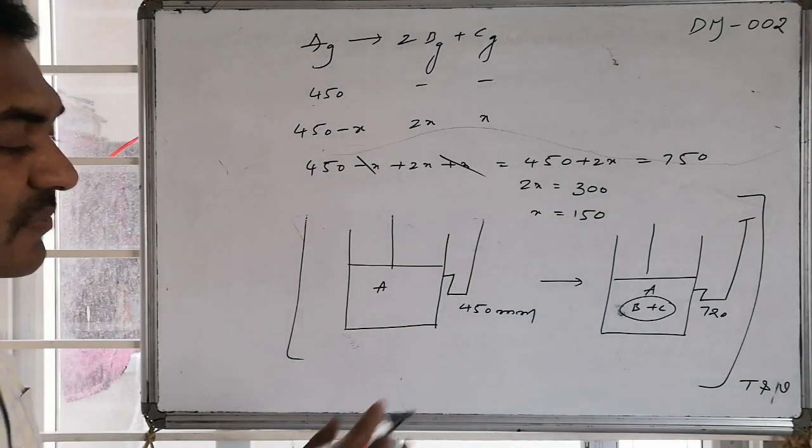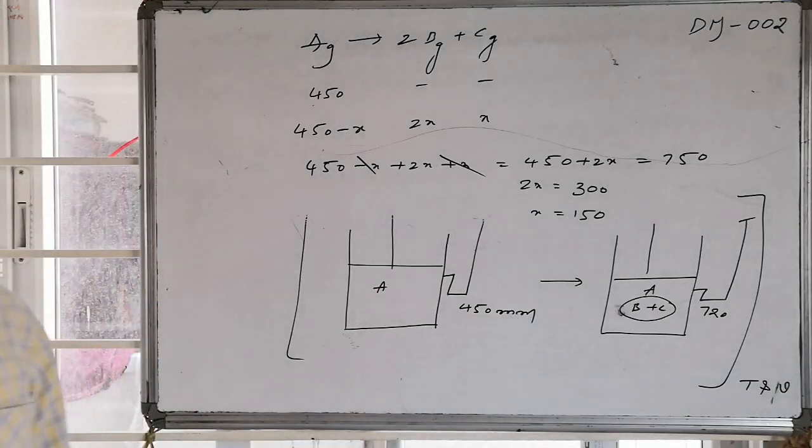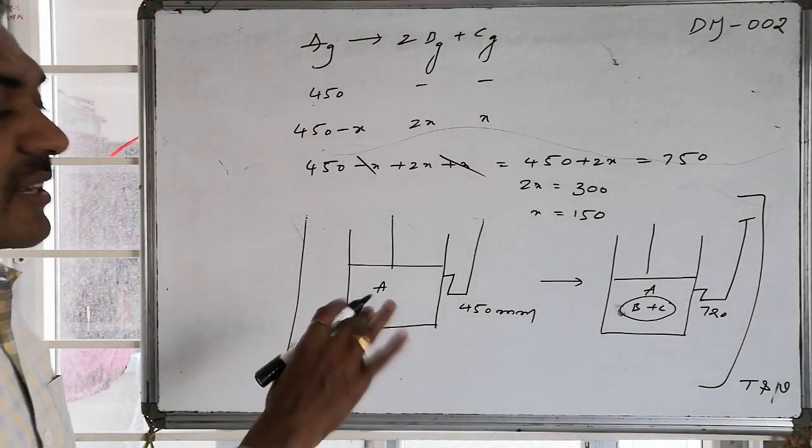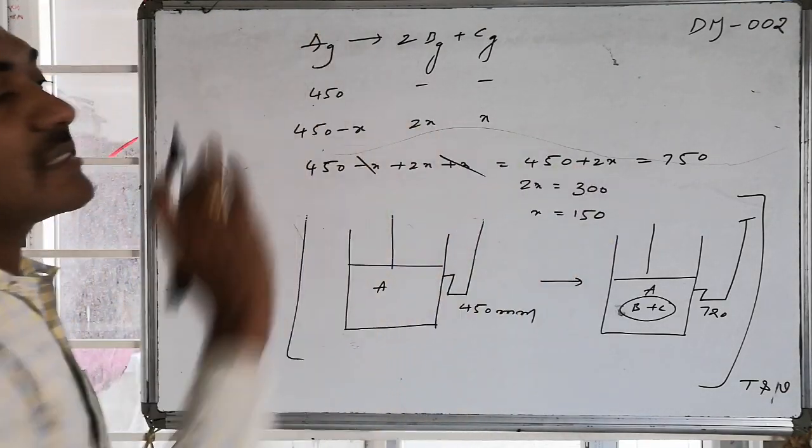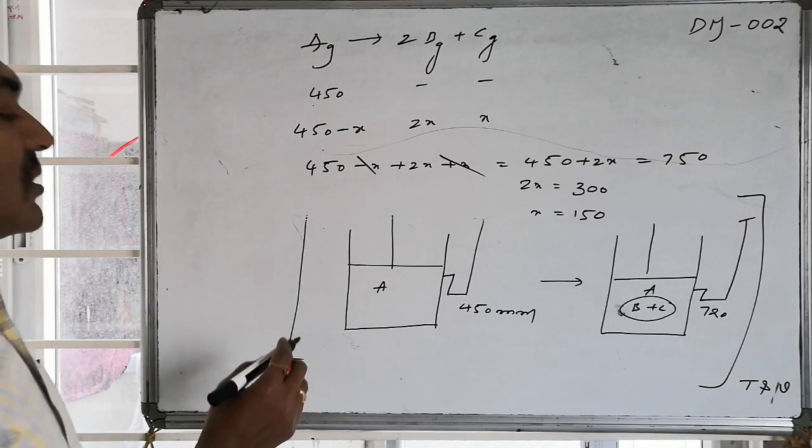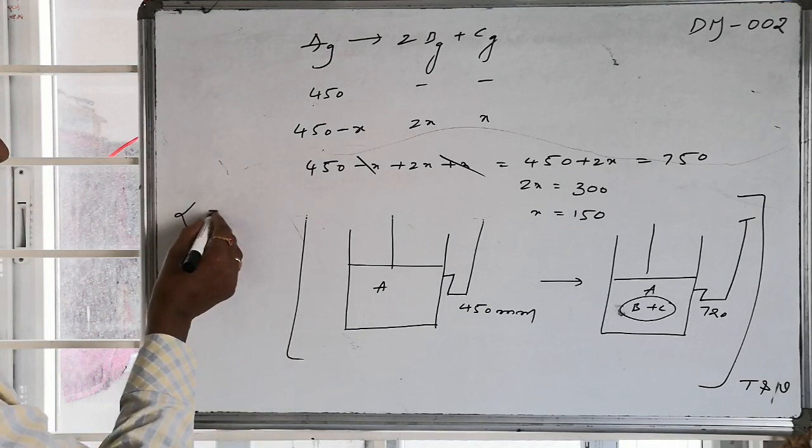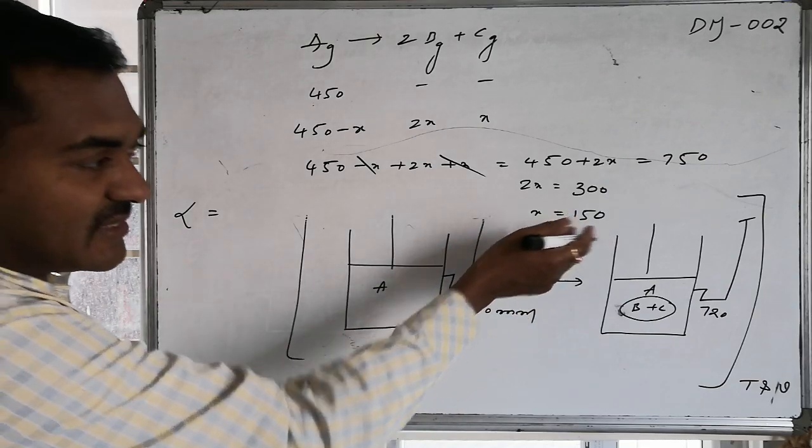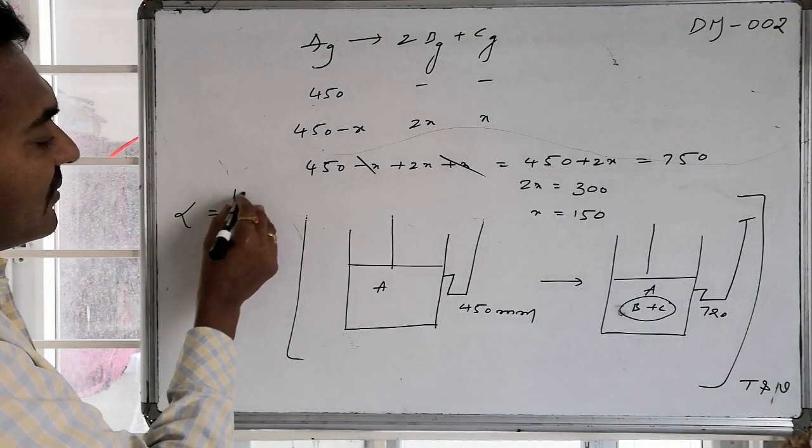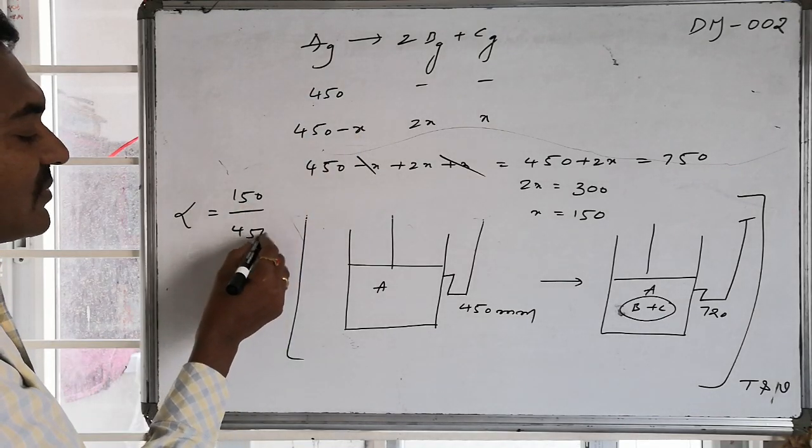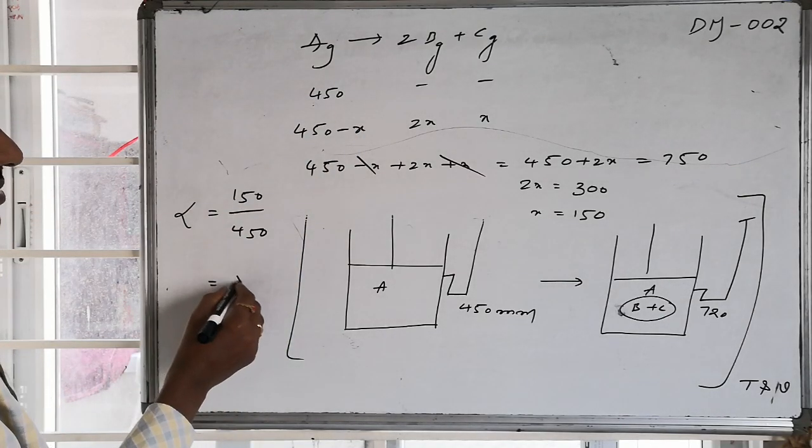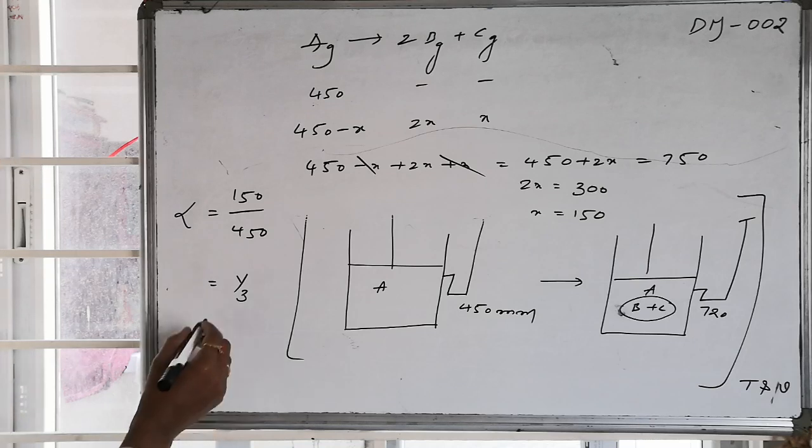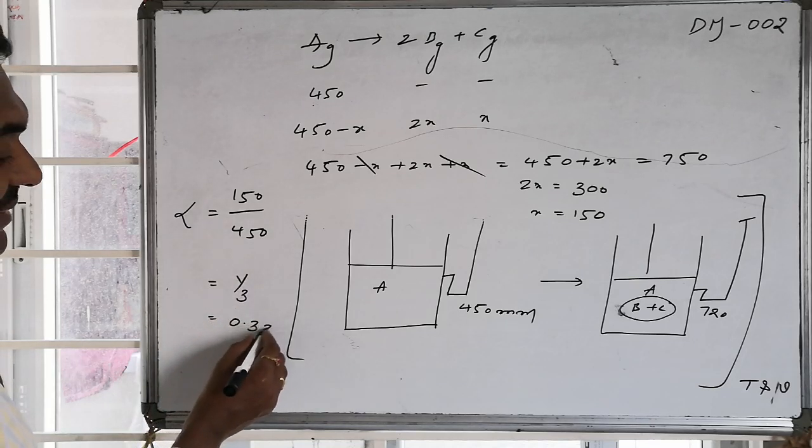So therefore whatever 450 mm of Hg is there, out of that 450 mm, relatively 150 mm Hg underwent decomposition. So therefore degree of dissociation, α can be given by number of molecules participated, proportional with 150. Whereas initial number of molecules are proportional with 450, this will become equal to 1 by 3, which is approximately 0.33.